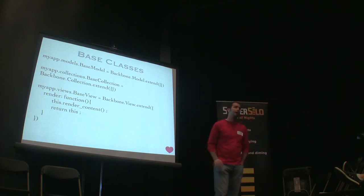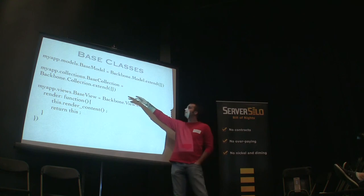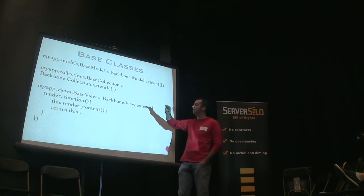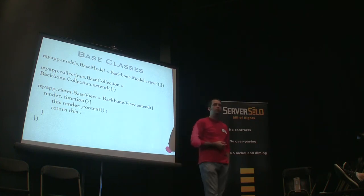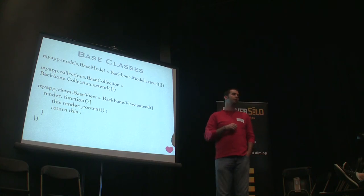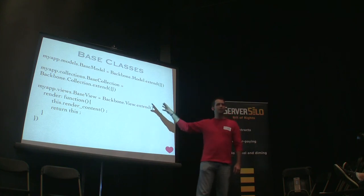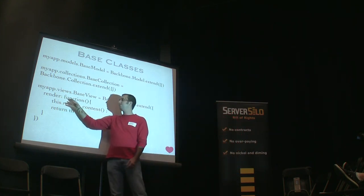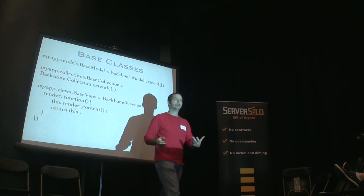Base classes — whenever I start a Backbone app, this is the first thing I do because you're going to need it. I have a base class for model, base class for collection, and a base class for view. I actually override the render function in all my views because there are often things you want to do either before or after every view is rendered. So I override the render function and come up with a convention for what function I want to use to actually render the details.